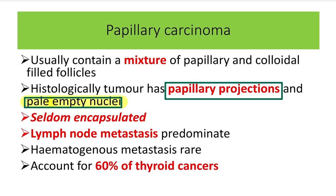The pale empty nuclei — meaning the nucleus appears empty — are known as orphan Annie nuclei. This is another key feature of papillary carcinoma. These two histological findings — papillary projections and orphan Annie nuclei — are very important for the diagnosis of papillary carcinoma.